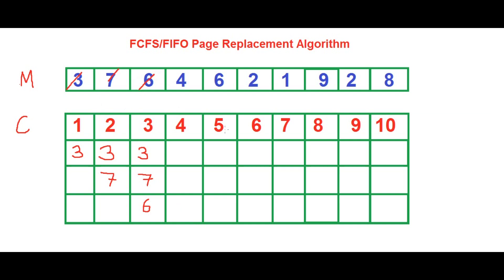In the fourth iteration, 4 wants to come in but there's no space in the cache memory, so the process scheduler has to make space by throwing out the oldest element in the memory buffer — that will be 3. This is FCFS basically. So we cancel out 3, enter 4, and write the rest as they are.